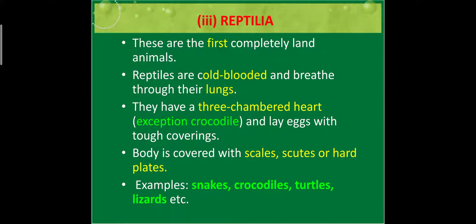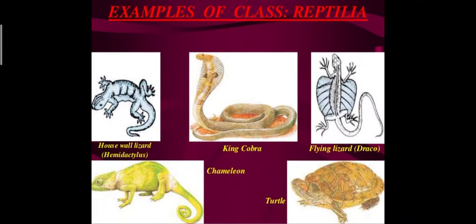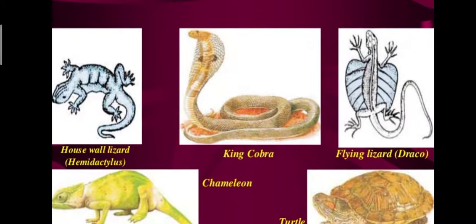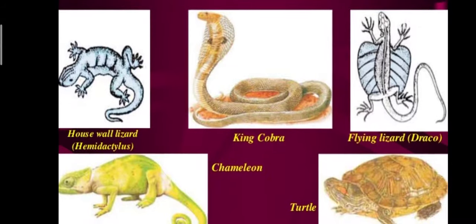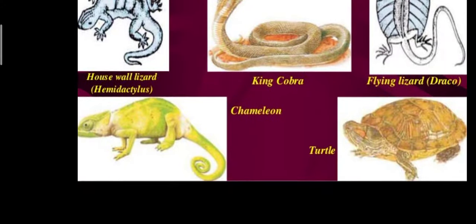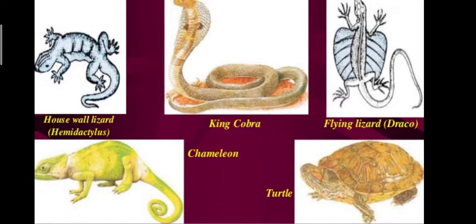They lay eggs with a tough covering — their eggs are covered with a calcium carbonate covering. Their body is covered with scales, skulls or scutes, depending on the climatic condition. Examples: snake, crocodile, turtle, housewall lizard (Hemidactylus), king cobra, flying lizard (Draco), chameleon and turtle.